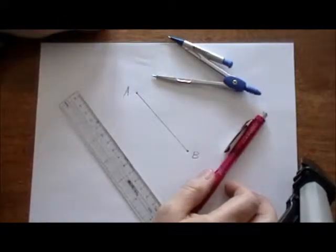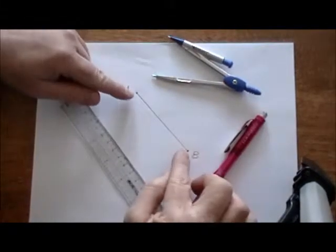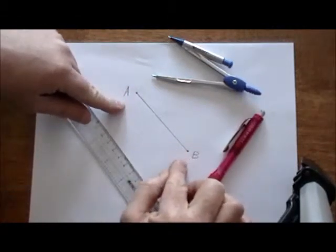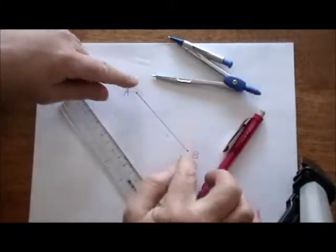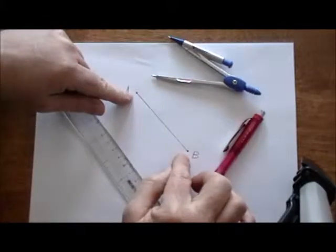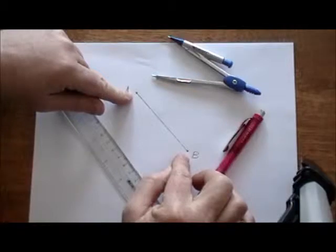So by the perpendicular bisector theorem, we know that any point, when we have a segment with points A and B here, any point that is equidistant from both points, both of these endpoints, will be on the perpendicular bisector.